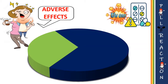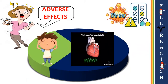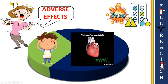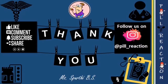Moving on to adverse effects: clinical studies have shown that the use of phosphodiesterase 3 inhibitors can cause headache and ventricular tachycardia. The reason is that PDE3 inhibitors cause increased cyclic AMP levels, which cause vasodilation of blood vessels around the head and neck — leading to headache — and increased force of contraction within the cardiac muscles, resulting in ventricular tachycardia.